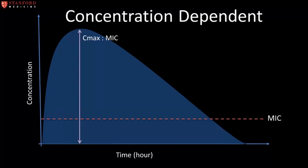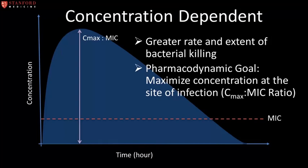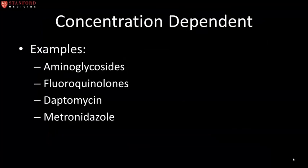For concentration-dependent antibiotics, the goal is to maximize the concentration and obtain the highest possible antimicrobial concentration at the site of infection, because higher drug concentrations result in a greater rate and extent of microbial killing. The major pharmacodynamic parameter that correlates with clinical and bacteriologic efficacy of these drugs is the peak drug concentration to MIC ratio. Antimicrobial classes that exhibit this pattern include aminoglycosides, fluoroquinolones, daptomycin, and metronidazole.